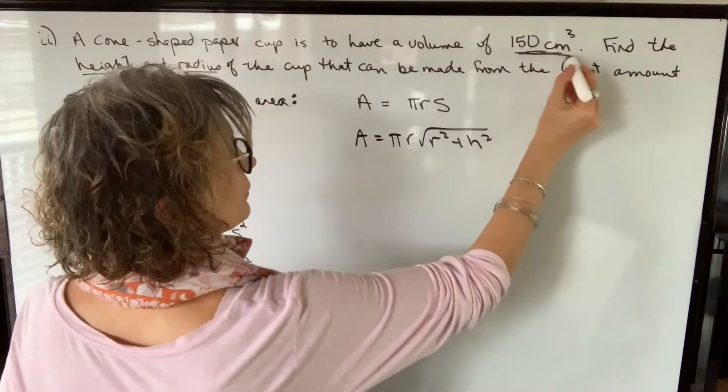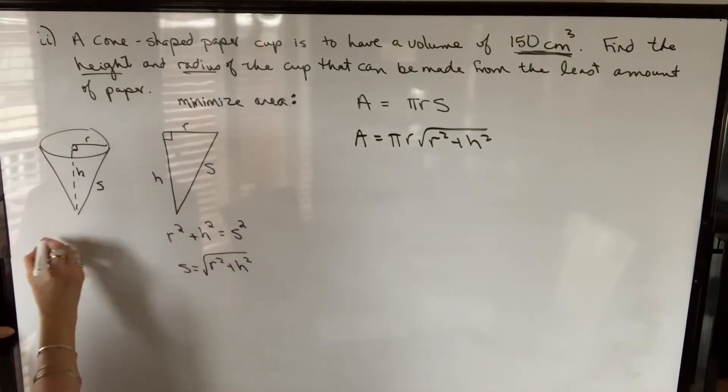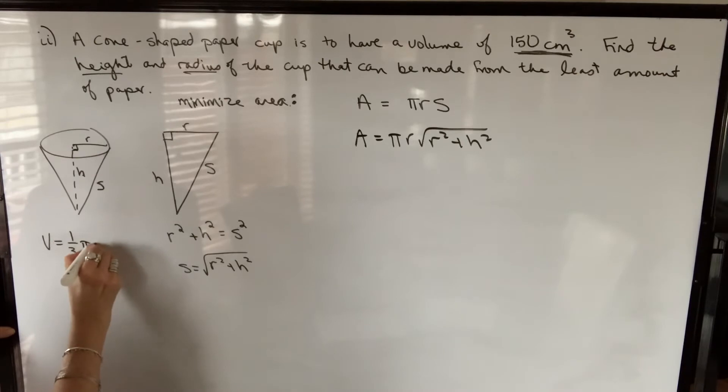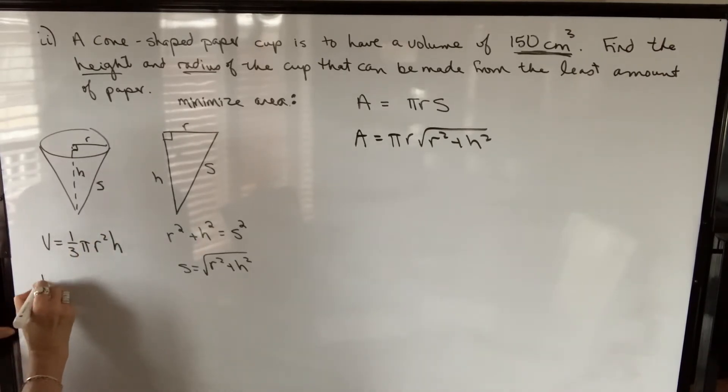So I have to think of a way to eliminate h and write h in terms of r. Well, that's where we use this volume. We know the volume of a cone is one third pi times radius squared times height. And if our volume is 150,